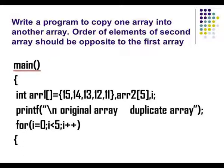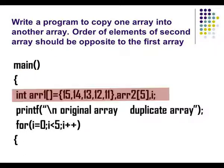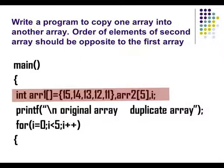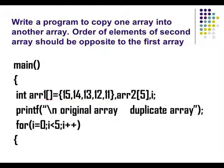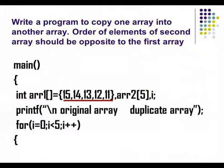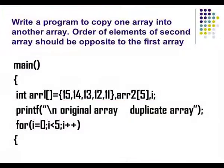Like all programs, this starts with the main function. I have two arrays of type integer. Array 1 is the array I want to be copied — I have already initialized its values in descending order from 15 to 11. Array 2 is the duplicate array.